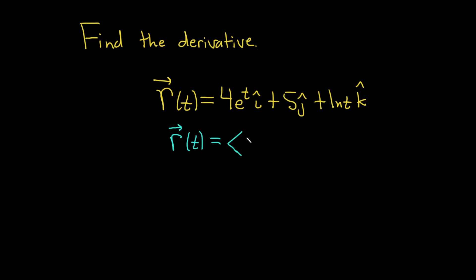So here the first component is 4e to the t. Here the second component is 5, and here the third component is the natural log of t. So these are just different forms of writing the same vector-valued function.